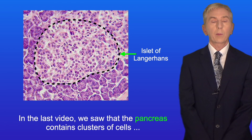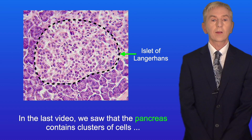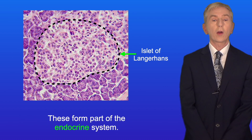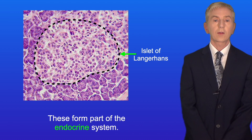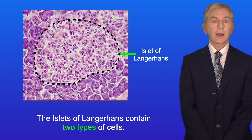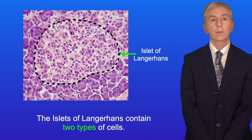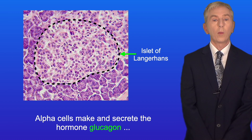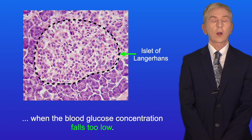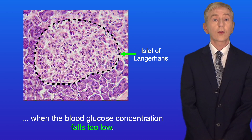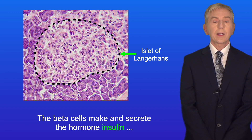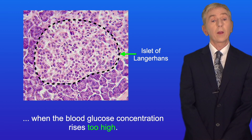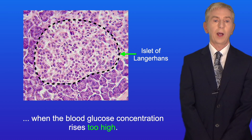In the last video, we saw that the pancreas contains clusters of cells called the islets of Langerhans, and these form part of the endocrine system. The islets of Langerhans contain two types of cells. Alpha cells make and secrete the hormone glucagon when the blood glucose concentration falls too low, and the beta cells make and secrete the hormone insulin when the blood glucose concentration rises too high.